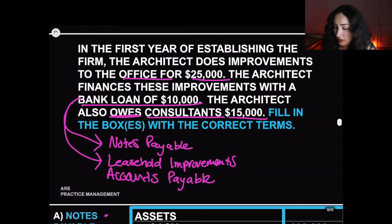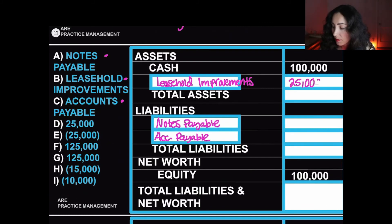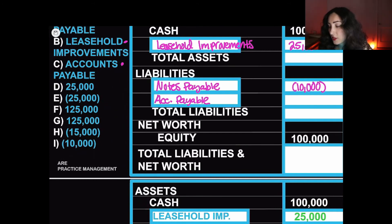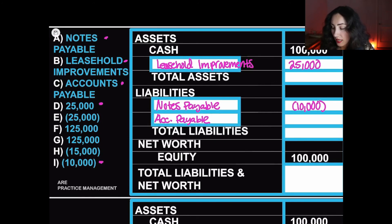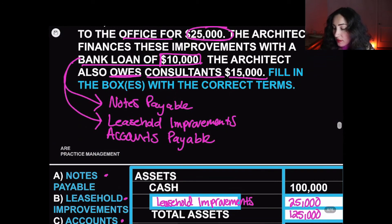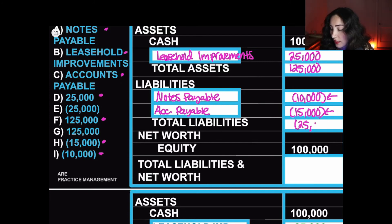The improvements cost $25,000, so we write $25,000 as a positive number. The bank loan amount is $10,000 — in accounting, parentheses mean the dollar amount is negative. Looking at the assets column, we can add cash and leasehold improvements, giving us $125,000 total assets. Accounts payable is $15,000. Total liabilities is $10,000 plus $15,000, which equals $25,000 worth of liabilities.